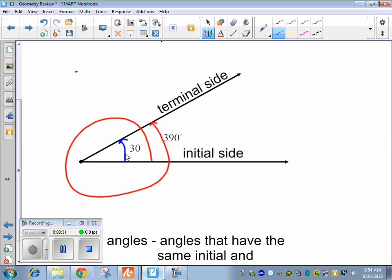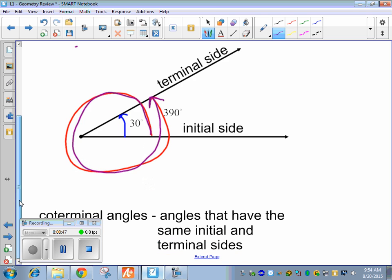So this inside angle might be 30 degrees, and we can actually start on the same initial side and do a full circle all the way around and end on the terminal side. And we have another angle that is the same, and these are called coterminal angles. So if you add 360, or you guys will learn how to also subtract 360, those angles are coterminal and they will end in the same spot.